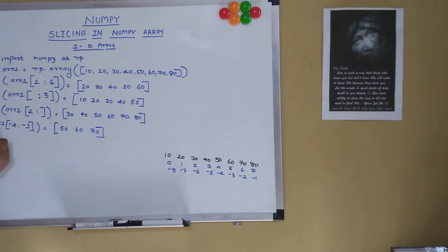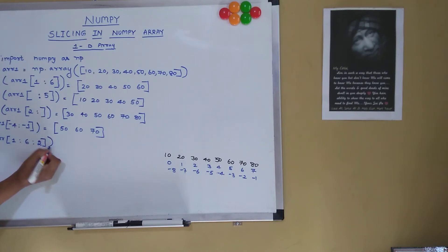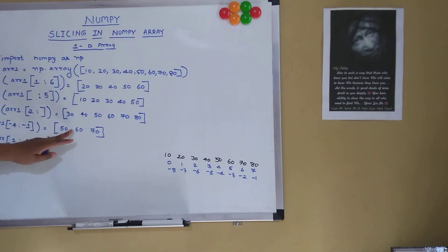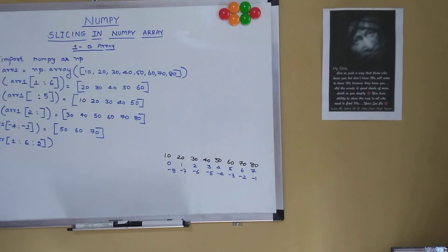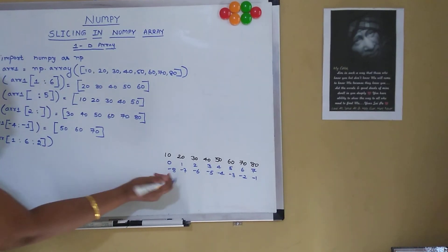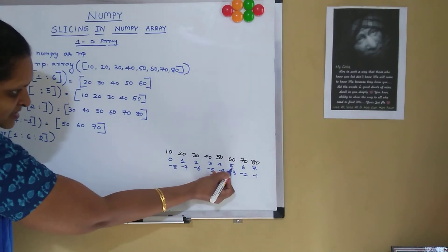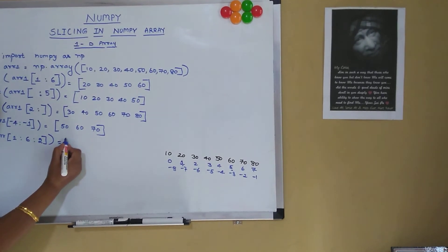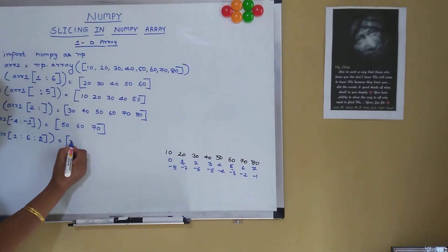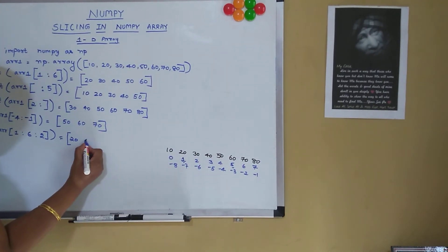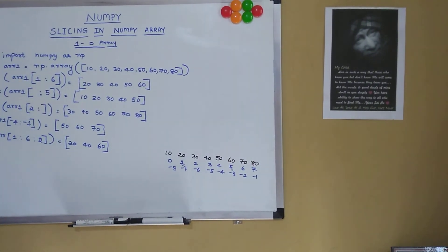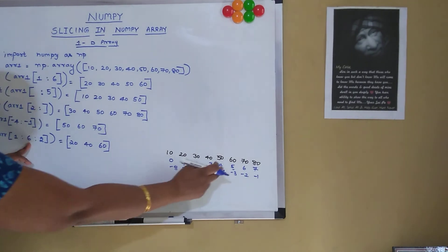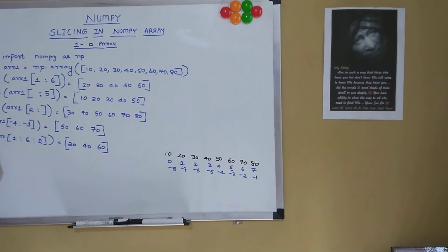Now let's consider step size with array1[1:6:2]. The step size is 2, so it omits every alternate element. From index 1 to 5, the elements are 20, 30, 40, 50, 60. With step 2, it considers 20, skips 30, considers 40, skips 50, and considers 60 — giving 20, 40, 60. Next, array1[::3] — no start or stop, so it spans the entire array with step 3. It writes 10, skips 20 and 30, writes 40, skips 50 and 60, writes 70.